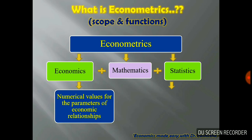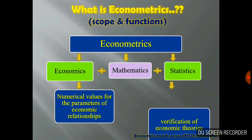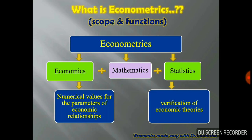The scope can be segregated into two main parts. The first says that it provides numerical values for the parameters of economic relationships, like the demographic features of a location or census, etc. The second part is mainly concerned with the verification of economic theories — for example, the theory of production, the quantity theory of money, or the law of demand, etc.